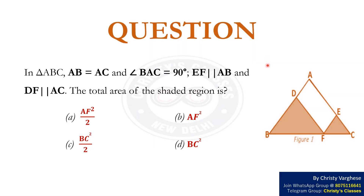In this video, let us find the area of the given region. In triangle ABC, AB equals AC and angle BAC equals 90 degrees. EF is parallel to AB and DF is parallel to AC. The total area of the shaded region is: A) AF² / 2, B) AF², C) BC² / 2, or D) BC².